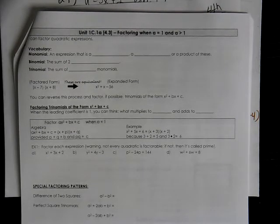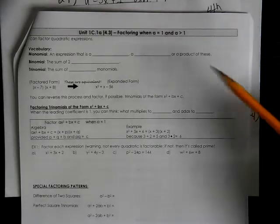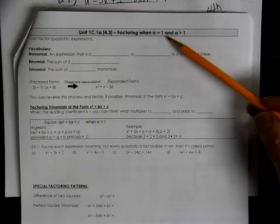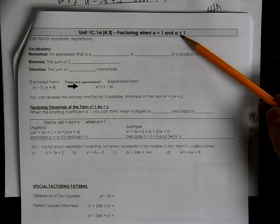This is Algebra 2 with Trig, Unit 1C, 1A. We're working on factoring when the A value is 1 and some examples when the A value is greater than 1.